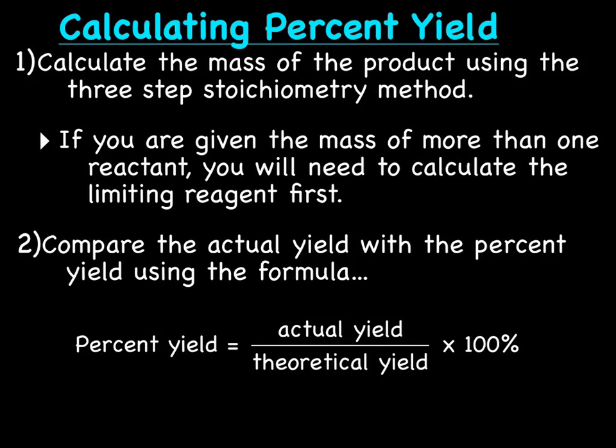So how do you calculate percent yield? The first thing you do is calculate the mass of product using the three-step stoichiometry method. So you start with the given, and you calculate until you get to the mass of the product, like we've been doing.